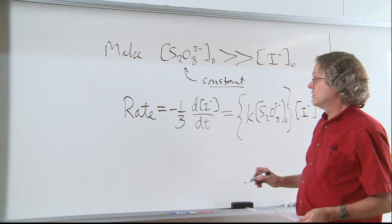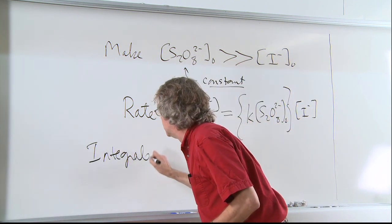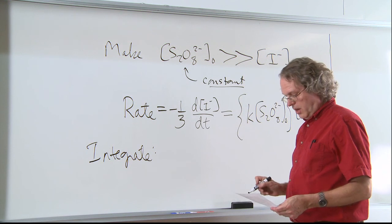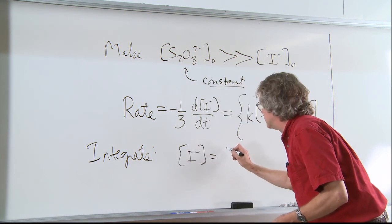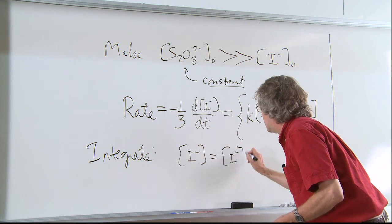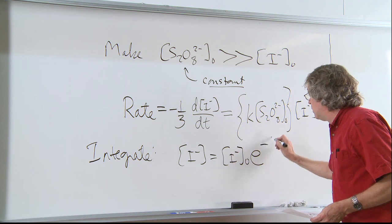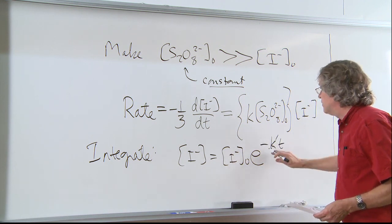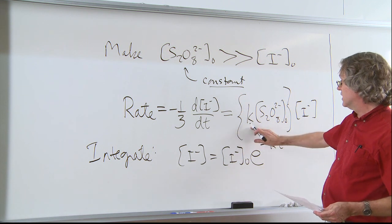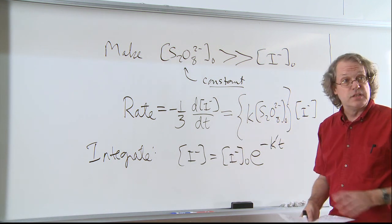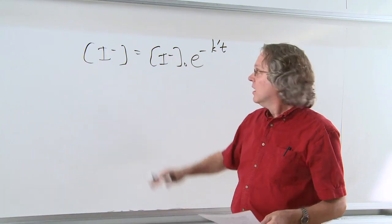And if we integrate this rate law, what we find is that the iodide concentration goes from its initial value, I minus, and decays through first order kinetics where the decay constant, rather than being the initial real rate constant, is actually the rate constant times this peroxydisulfate ion concentration.